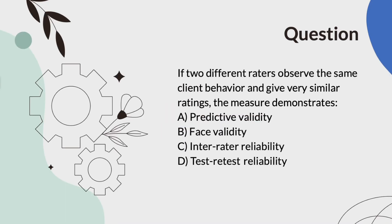If two different raters observe the same client behavior and give very similar ratings, the measure demonstrates... A, predictive validity. B, face validity. C, inter-rater reliability. Or D, test-retest reliability. And the answer is C, inter-rater reliability.